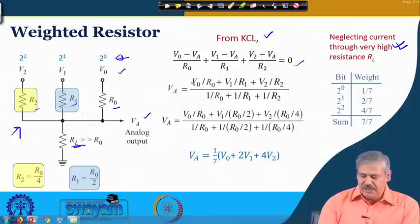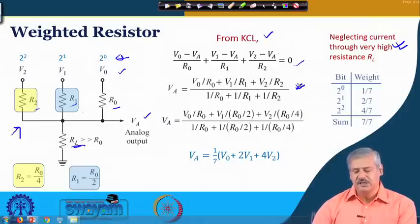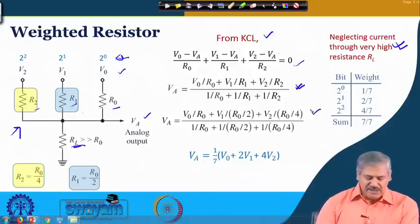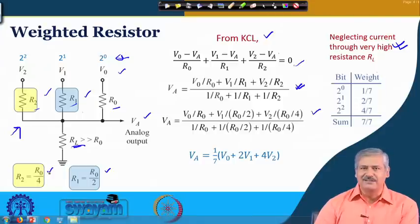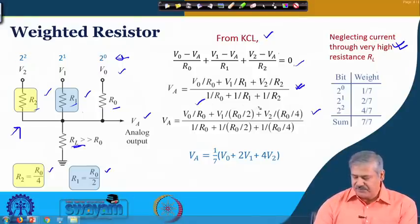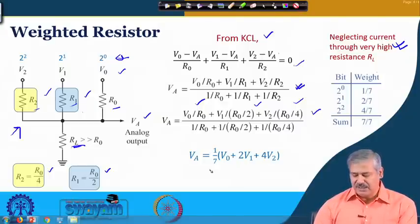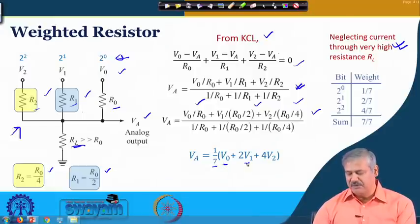Taking all the Va terms to one side and simplifying gives the expression for Va. If we set R1 = R0/2 and R2 = R0/4 — that is why it is called the weighted resistor method, with resistor values as R0 divided by integer powers of 2 — then after cancelling R0, we get Va = (1/7)(V0 + 2·V1 + 4·V2). The weight of V0 is 1/7, the weight of V1 is 2/7, and the weight of V2 is 4/7; they sum to 7.